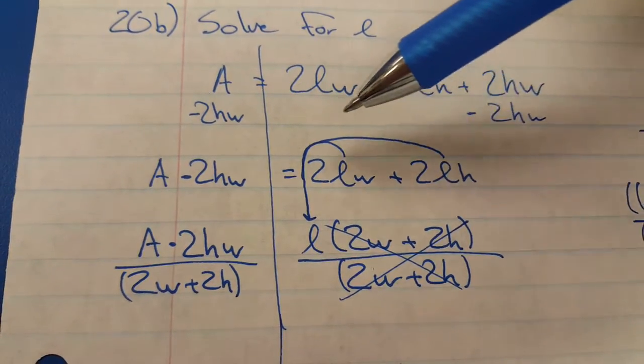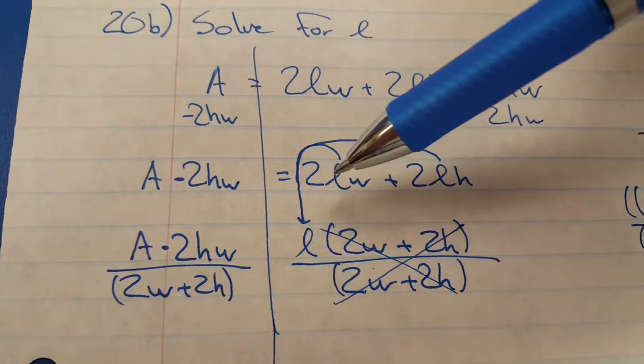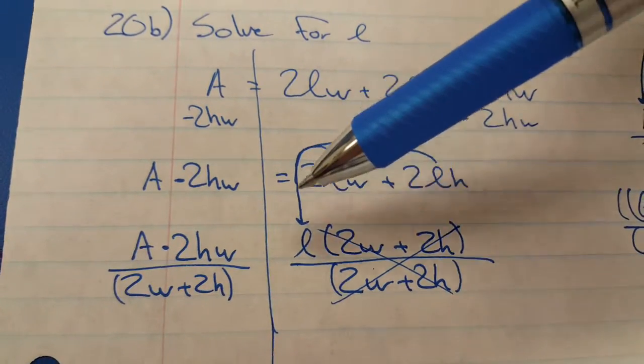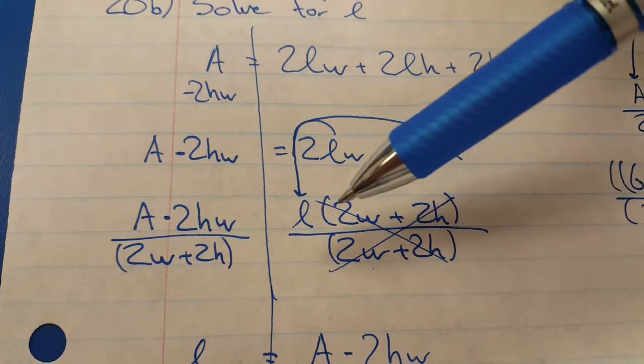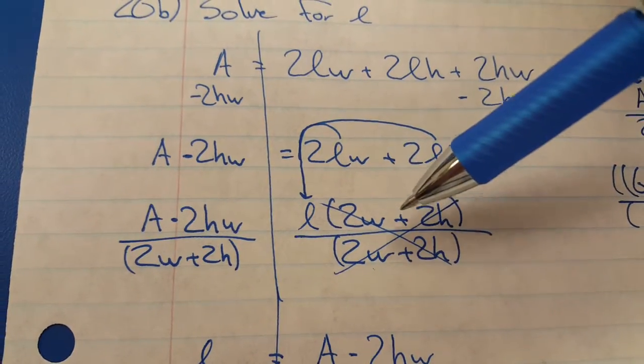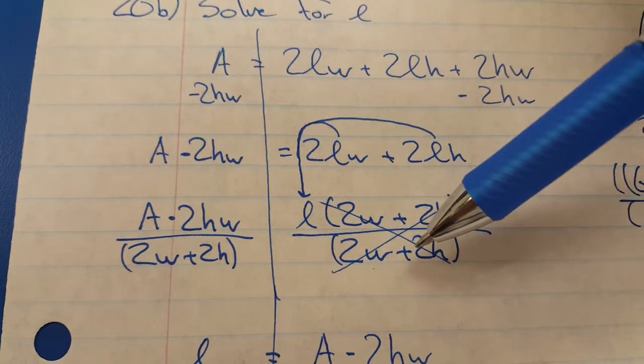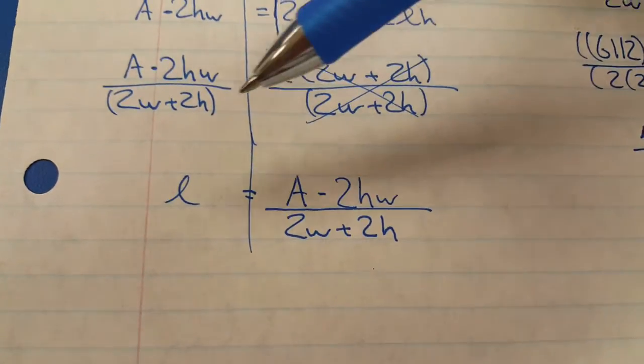Okay, if L is stuck in here and it's stuck in here, you got to take it back out by reverse distribution. Then basically L times this group. Can you wax out this entire group in one move? Yes you can. You just divide by that group. So there you go.